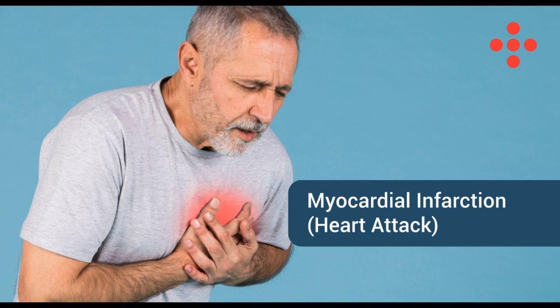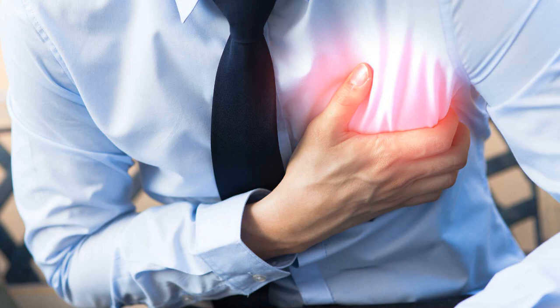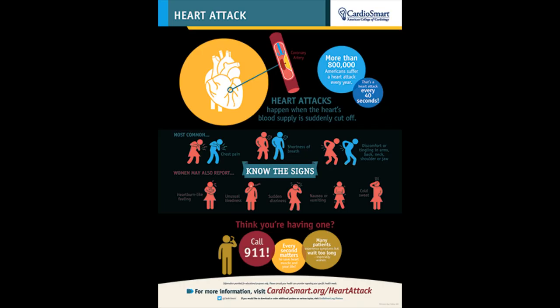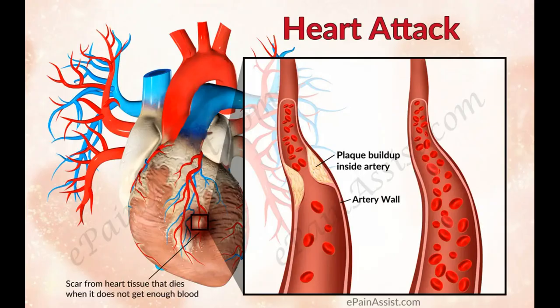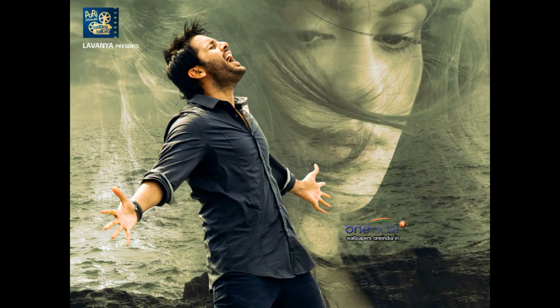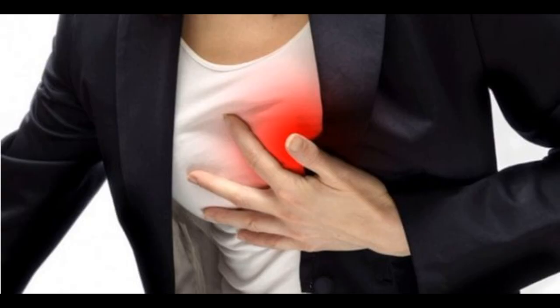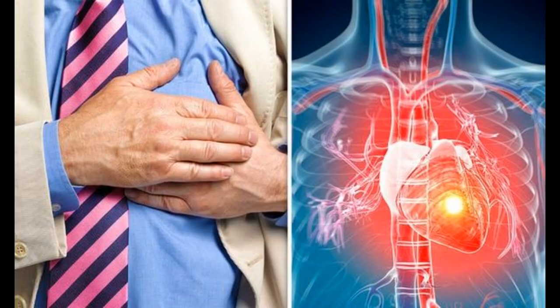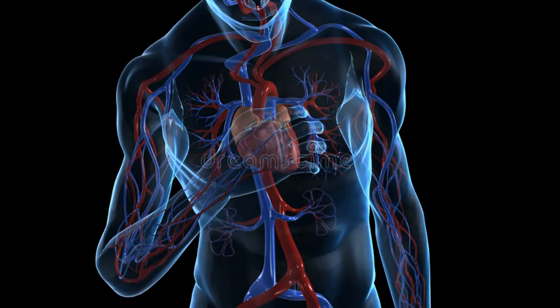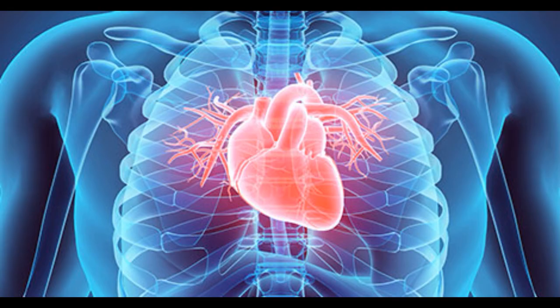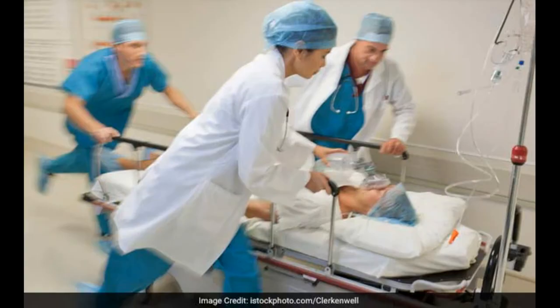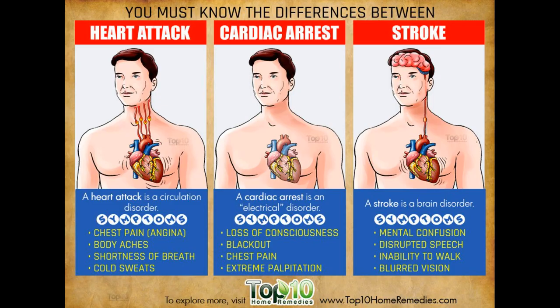Location of the heart. For all its might, the cone-shaped heart is relatively small, roughly the same size as a clenched fist — about 12 cm long, 9 cm wide at its broadest point and 6 cm thick. Its mass averages 250 g in adult females and 300 g in adult males. The heart rests on the diaphragm near the midline of the thoracic cavity, lying in the mediastinum, a mass of tissue extending from the sternum to the vertebral column between the lungs.